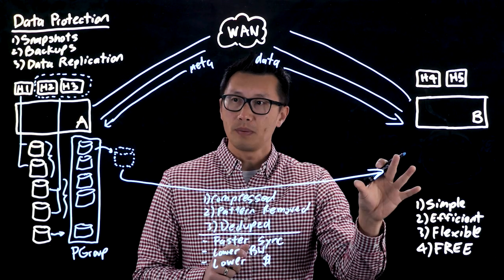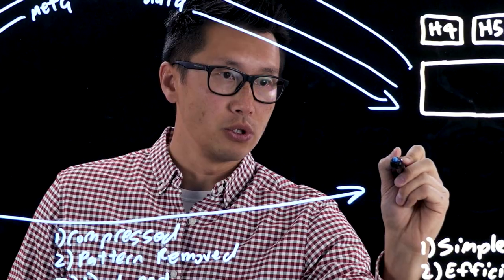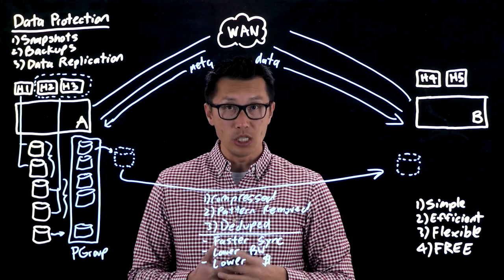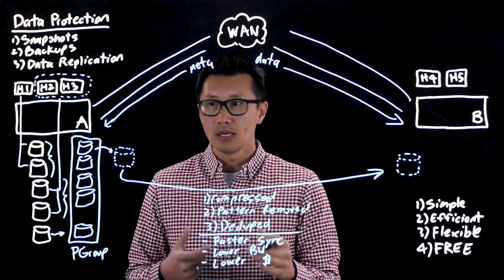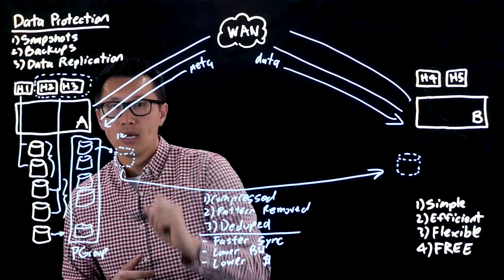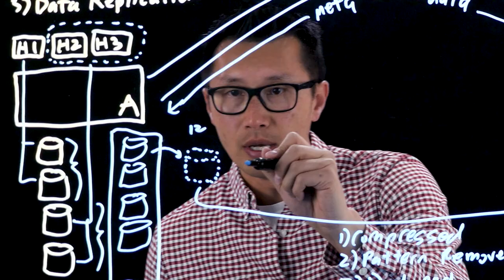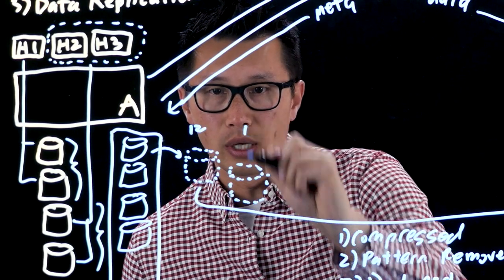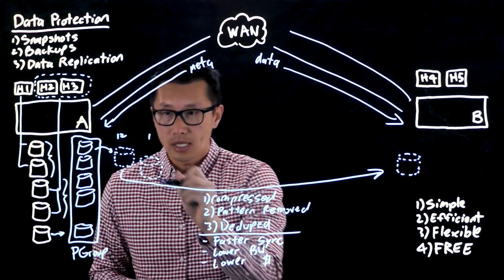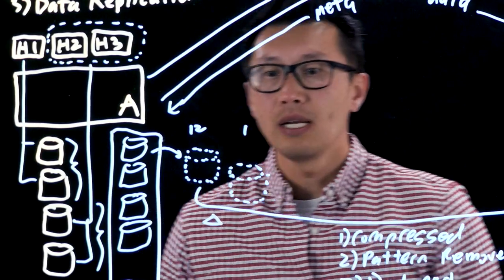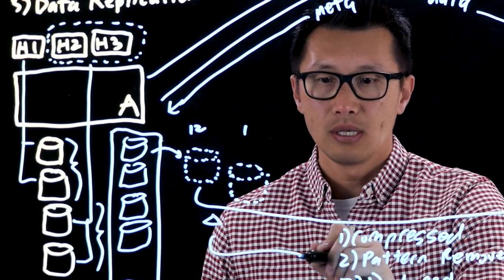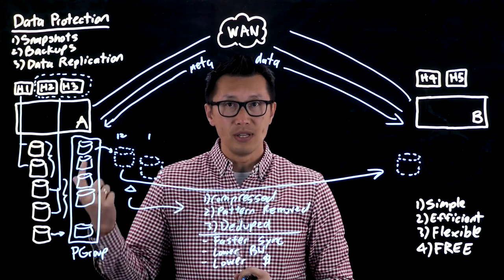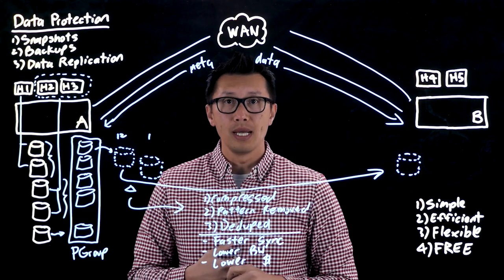Once the full sync is complete and that snapshot exists on site B, customers can choose periodic re-syncs. For example, if the initial sync was done at noon and they want to sync again at one o'clock, the array takes another snapshot at one o'clock, compares the two snapshots, and only sends the delta across to the other side. This means only the last changed blocks are sent — not everything in between — again resulting in lower bandwidth requirements and lower cost.